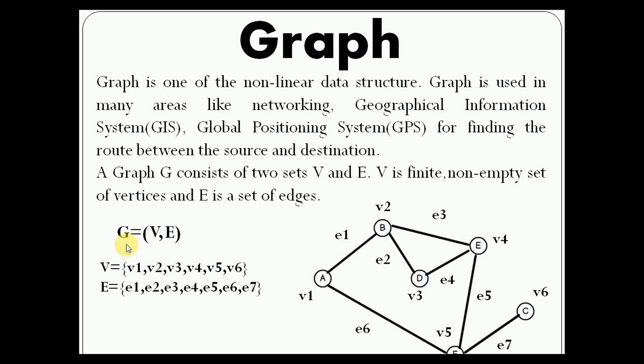In this diagram, G is a graph where we use V for the set of vertices and E for the set of edges. The vertices V1, V2, V3, V4, V5, and V6 are connected by edges E1, E2, E3, E4, E5, E6, and E7. This is a graph, a collection of vertices and edges.